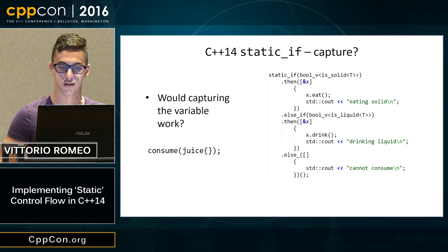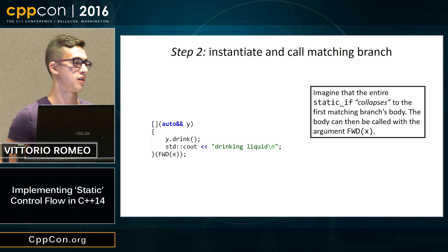fwd is just a macro for std::forward that uses decltype of the argument, so you don't have to specify the type again. It's just a macro convenience.